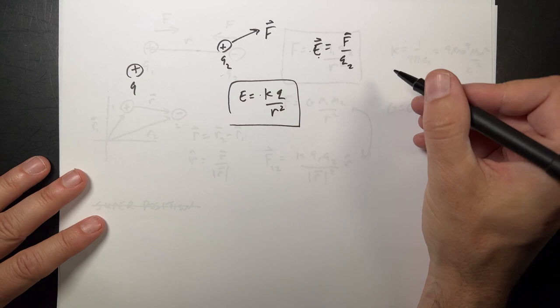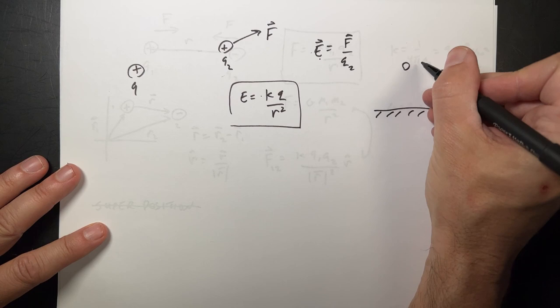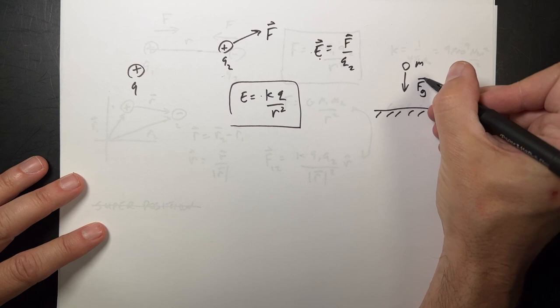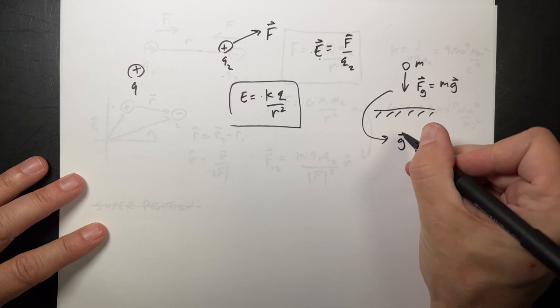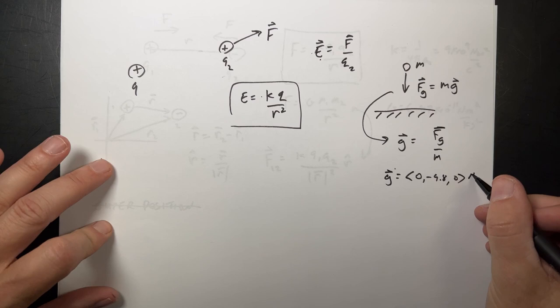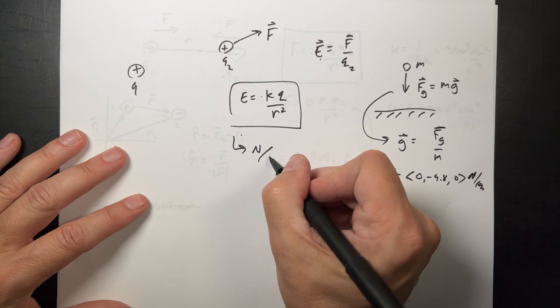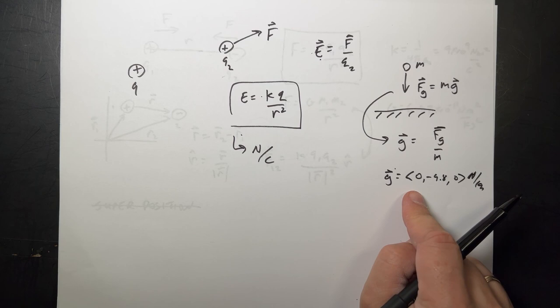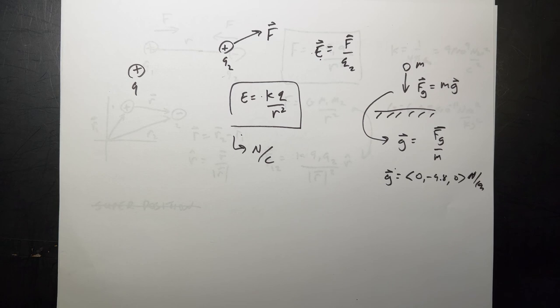This is the same thing that we do for gravity, right? If I have an object right here, M, and I want to calculate the gravitational force, I would say FG equals MG. Or I could say G equals FG over M, and G is the gravitational field: negative 9.8 newtons per kilogram. This would be electric field in newtons per coulomb. It's the force per unit charge, that's the force per unit mass. Because the gravitational force depends on mass, the coulomb force depends on charge.